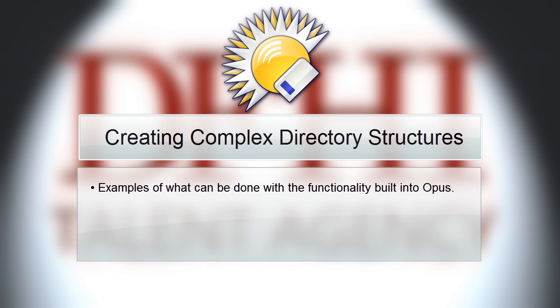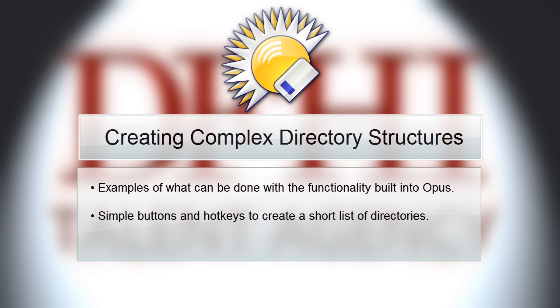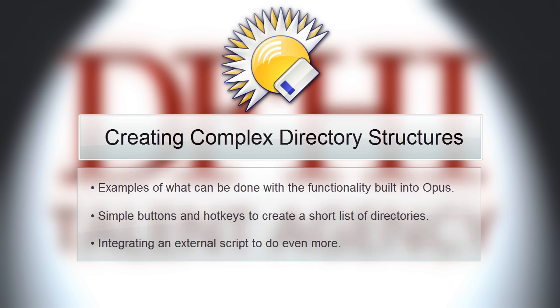We'll start with some examples of what can be done with the functionality built into Opus. Then we'll look at how simple buttons and hotkeys can be used to create a shortlist of directories below the current folder. Finally, we'll look at how an external script can be integrated into Opus to do even more.